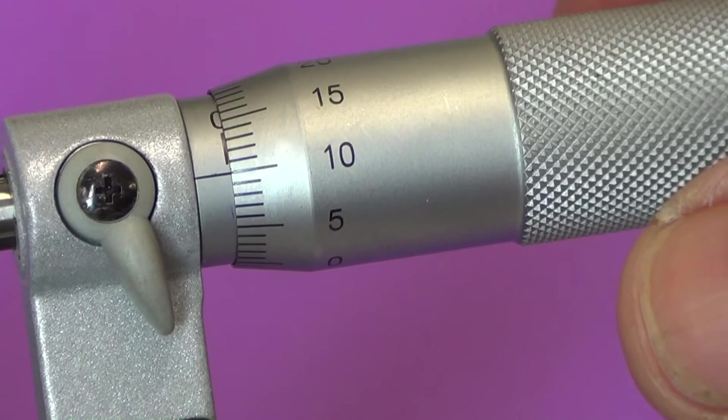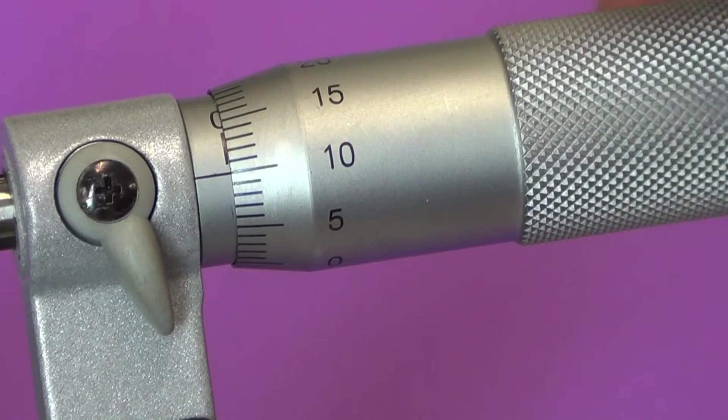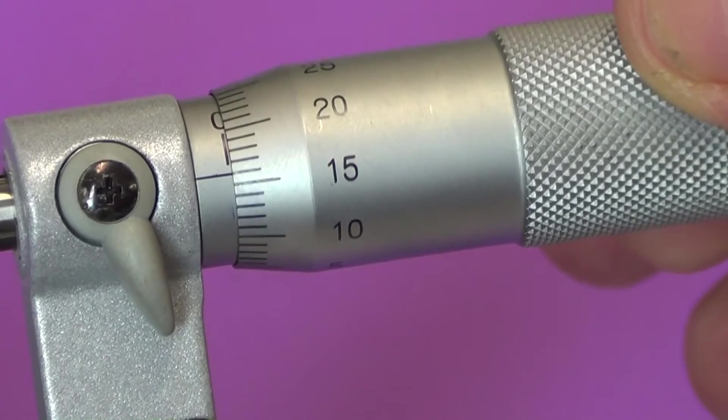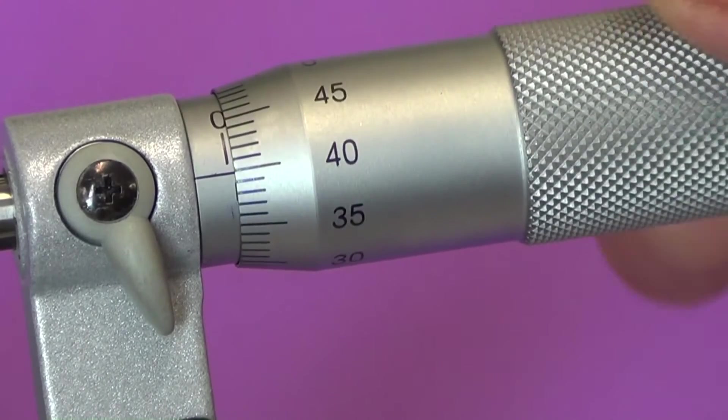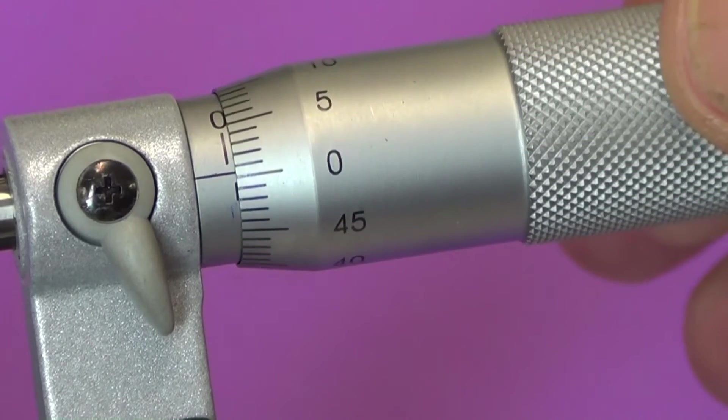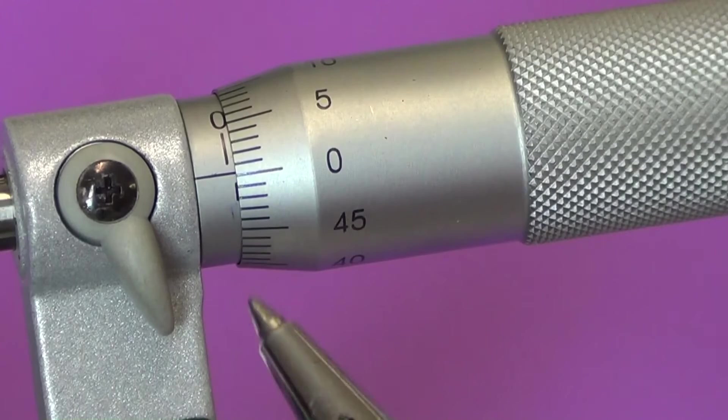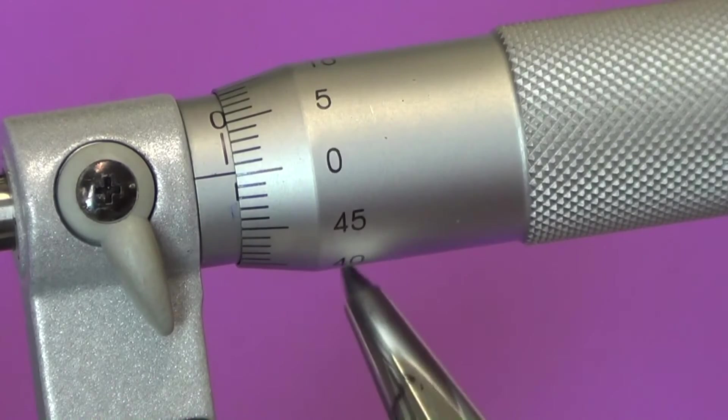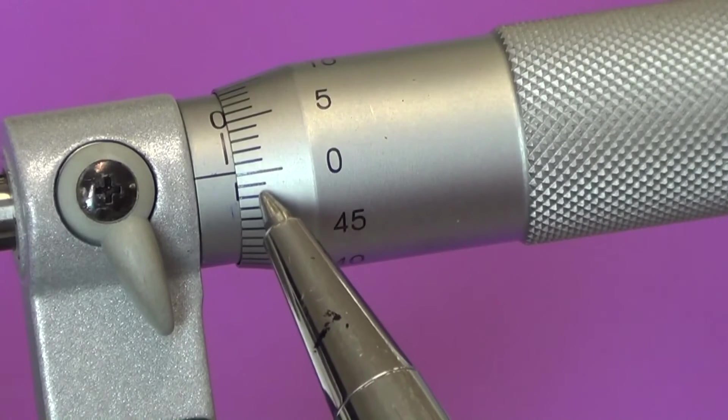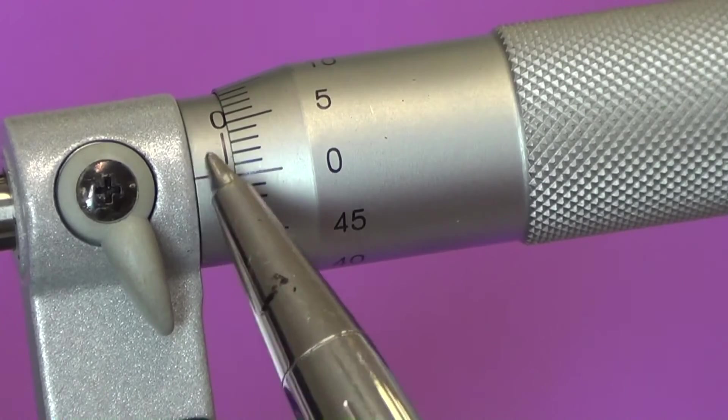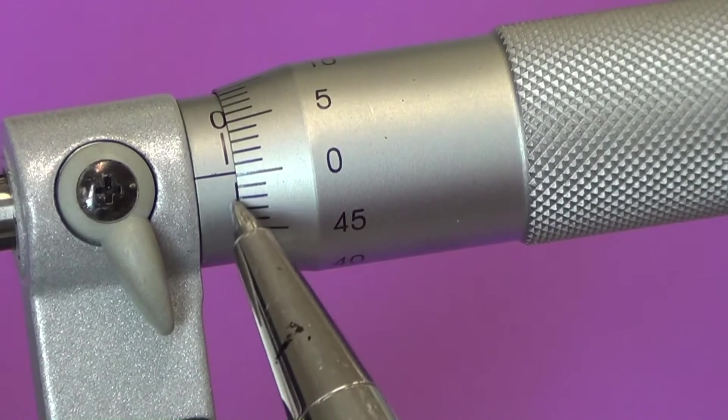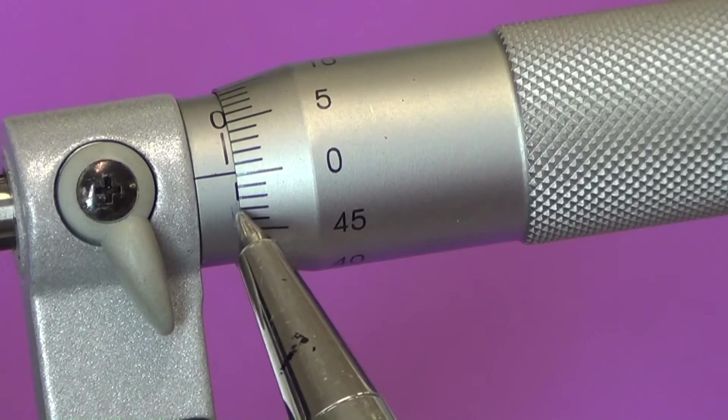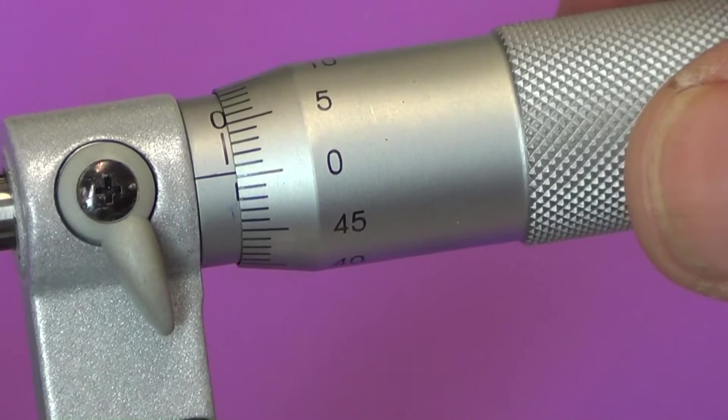Opening up the anvils a little bit more, we will continue on from 0.1, 0.15 of a millimeter, 0.2 of a millimeter or two tenths of a millimeter, 0.25, 0.3, 0.4 of a millimeter, 0.45, and 0.5 of a millimeter or half a millimeter. Half a millimeter is also, as you can see, 50 increments or 50 divisions around the thimble. So we've actually, in one revolution, we have gone through 50 one hundredths of a millimeter, and we have arrived at half a millimeter, and you can just see the half millimeter sign is visible on the edge of the thimble.